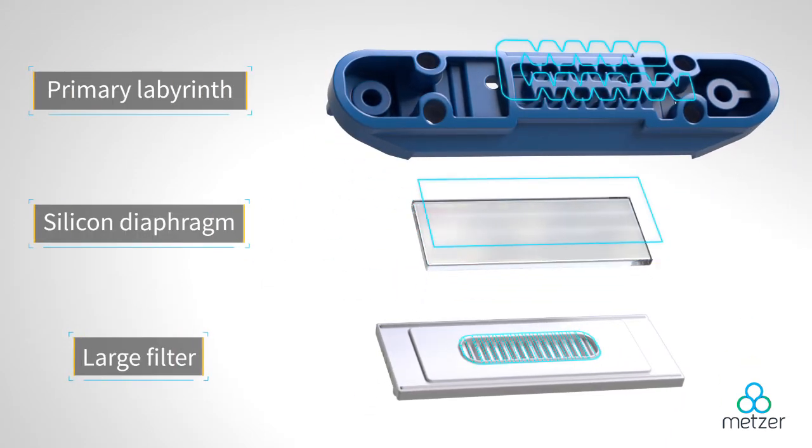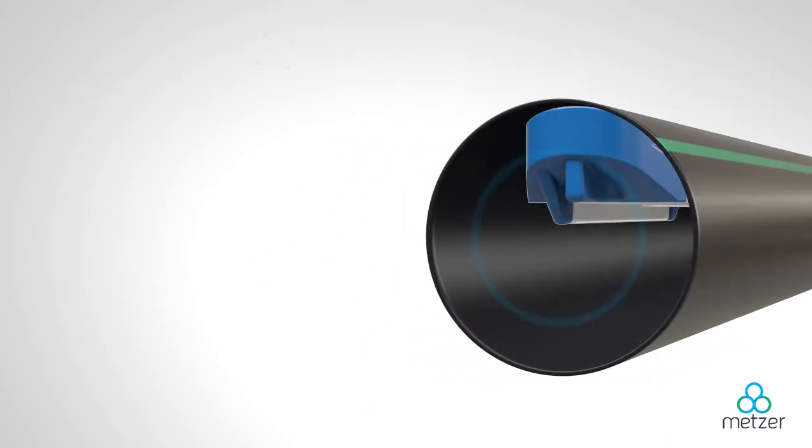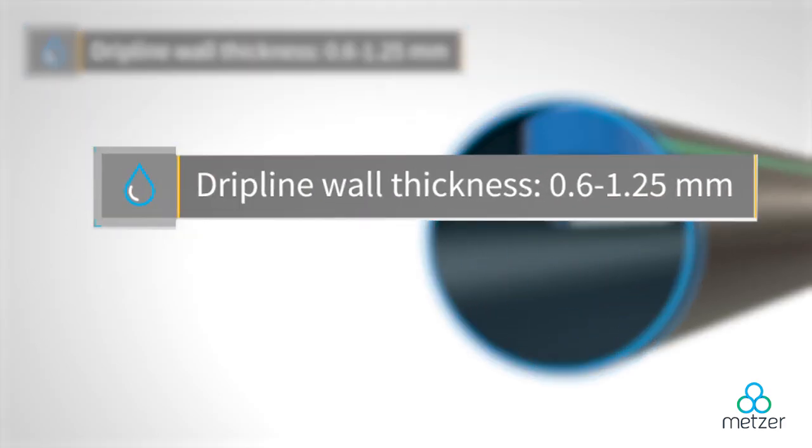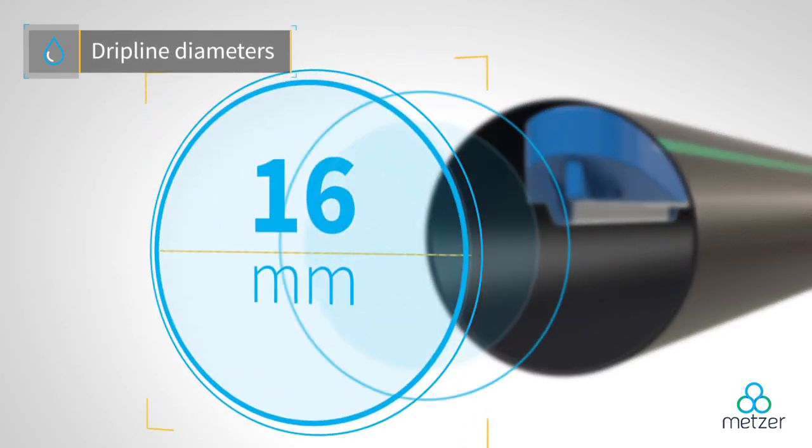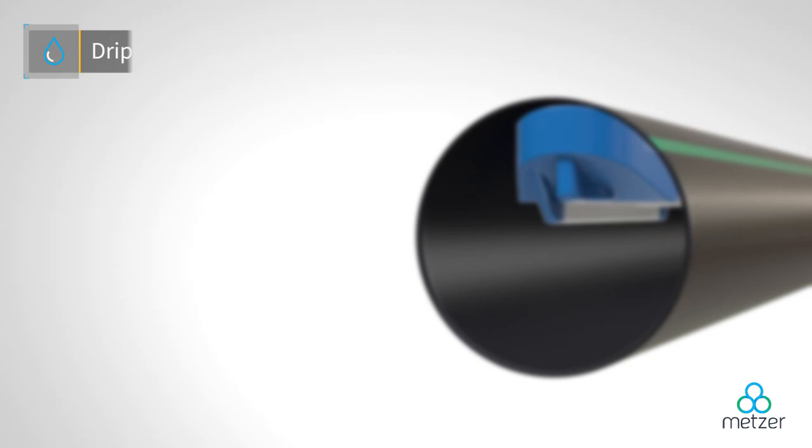Together, these features accommodate a wide variety of working pressures, serving dripline wall thicknesses from 0.6 to 1.25 mm and dripline diameters of 16, 17, 20, 22, and 25 mm.